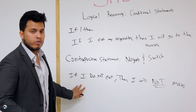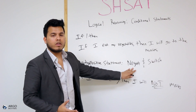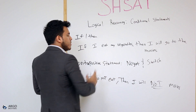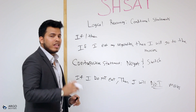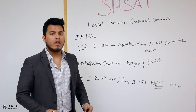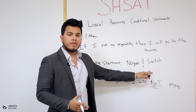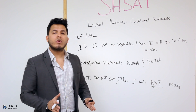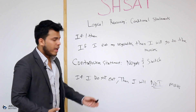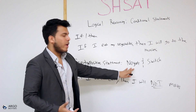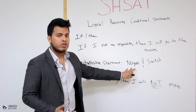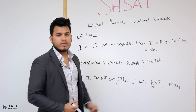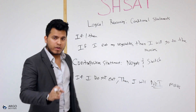We did only one component of this rule. To make a contrapositive statement, you must negate and switch. Often a lot of students will either just switch it or just negate it, but you have to do both. The test will try to trick you — they'll give you answer choices with just the negated part, or they'll just switch the if-then statements. Don't be fooled by them.